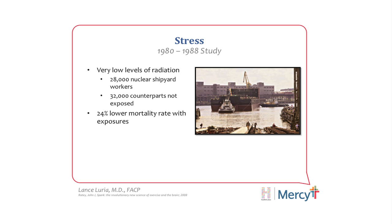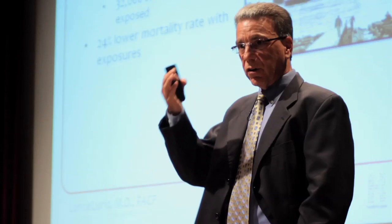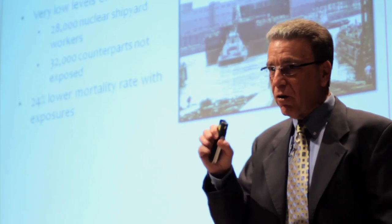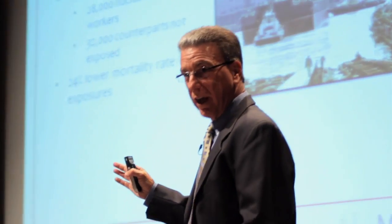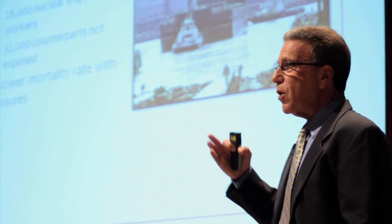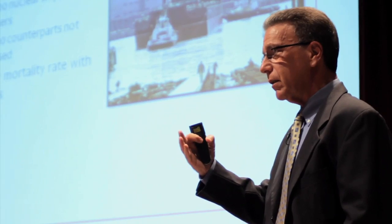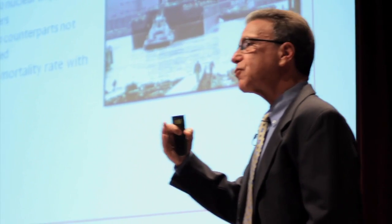This was a study done in 1980. They took about 28,000 nuclear shipyard workers and 32,000 counterparts not exposed to radiation, and they compared the two. They wanted to show that low levels of radiation were bad for the workers. But they found that the 24% lower mortality rate was with the people who were exposed to the radiation — at very low levels, not walking inside a nuclear furnace. Because it motivated and irritated the cell under attack to become stronger and hardier and healthier.